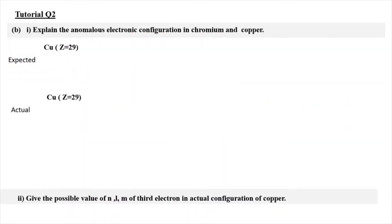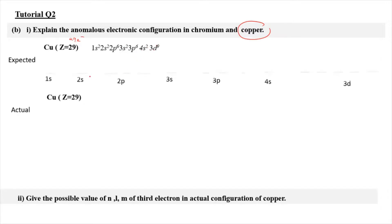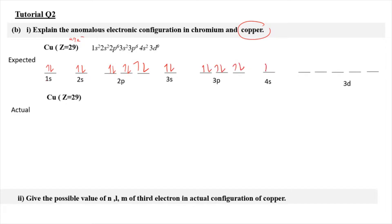Now we move on to the anomalous case in copper. Copper has 29 electrons. The predicted SPDF notation is: 1s2, 2s2, 2p6 (that's 10), 3s2, 3p6, 4s2 (that's 20), and then 3d9. We draw the orbital diagram and fill in all 29 electrons. For 3d9, we fill singly first — 5 electrons — then pair 4 of those, leaving one singly. So the predicted configuration is 4s2 and 3d9.